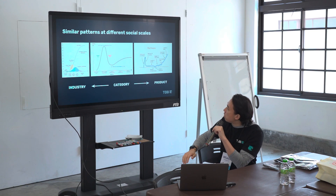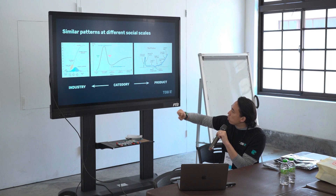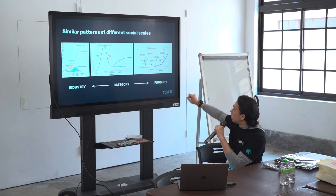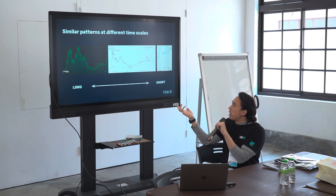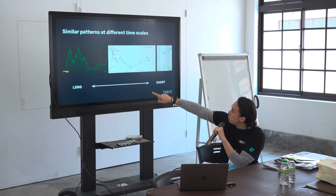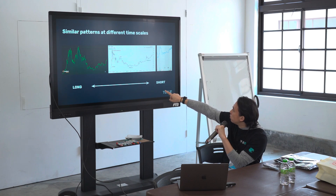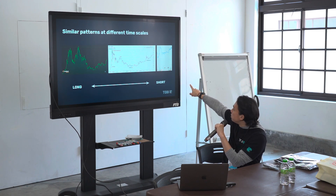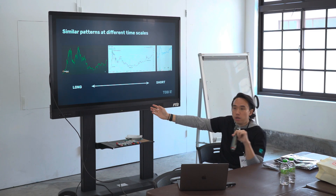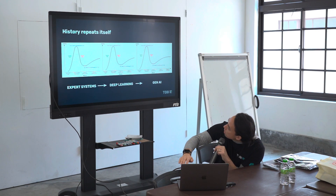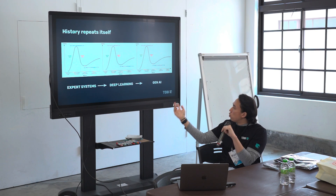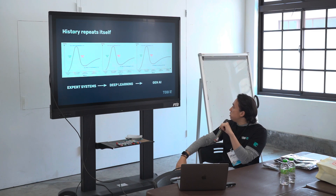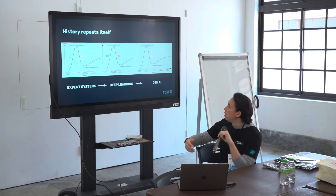What that means is that industry, category, product — if you think about it sort of like Web3 at the industry level, then wallets as a product category, then Toby Wallet specifically — it's the same kind of mapping. And it's very interesting to think about it as very similar even at different timescales. If you look at the price of Bitcoin all time, it looks remarkably similar to what it did in the period 2014 to 2016. History ends up repeating itself — this is AI in the 80s with expert systems, deep learning in the 2000s, and then recently it's generative. It's going to repeat itself over and over.